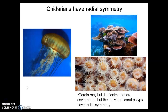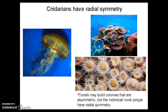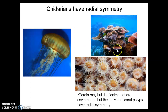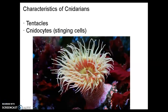Another thing common among cnidarians is that they are radially symmetrical, like a jellyfish. Corals may look asymmetrical when you look at the whole coral, but a coral is really a colony of many, many cnidarians. If you look at the small individual coral polyps that build this structure, each one is radially symmetrical — so the entire colony might be asymmetrical, but each individual coral polyp has radial symmetry. They all also have tentacles with cnidocytes, or stinging cells, on them.